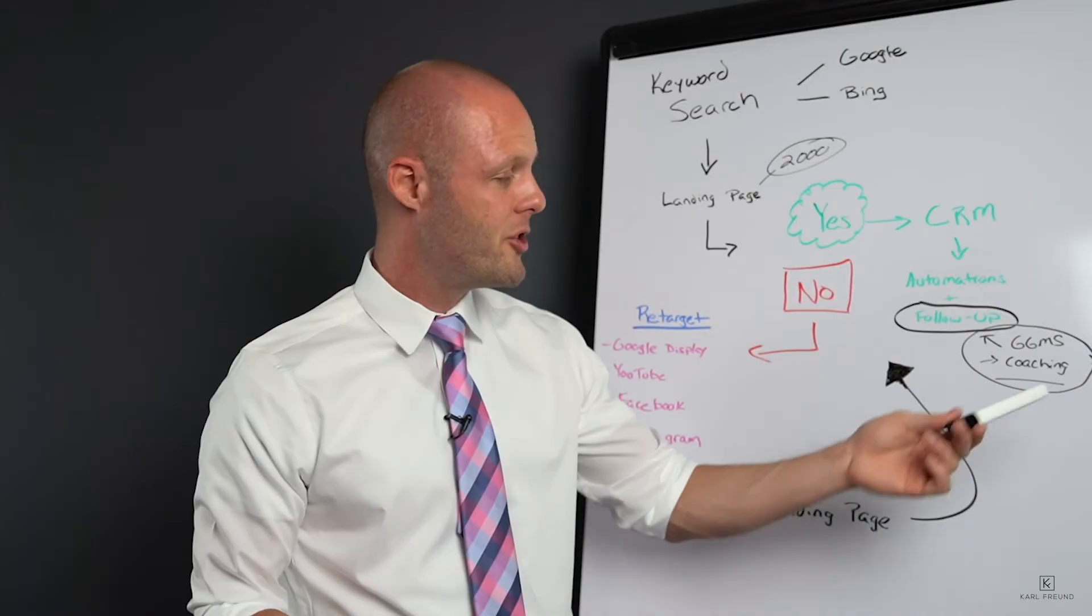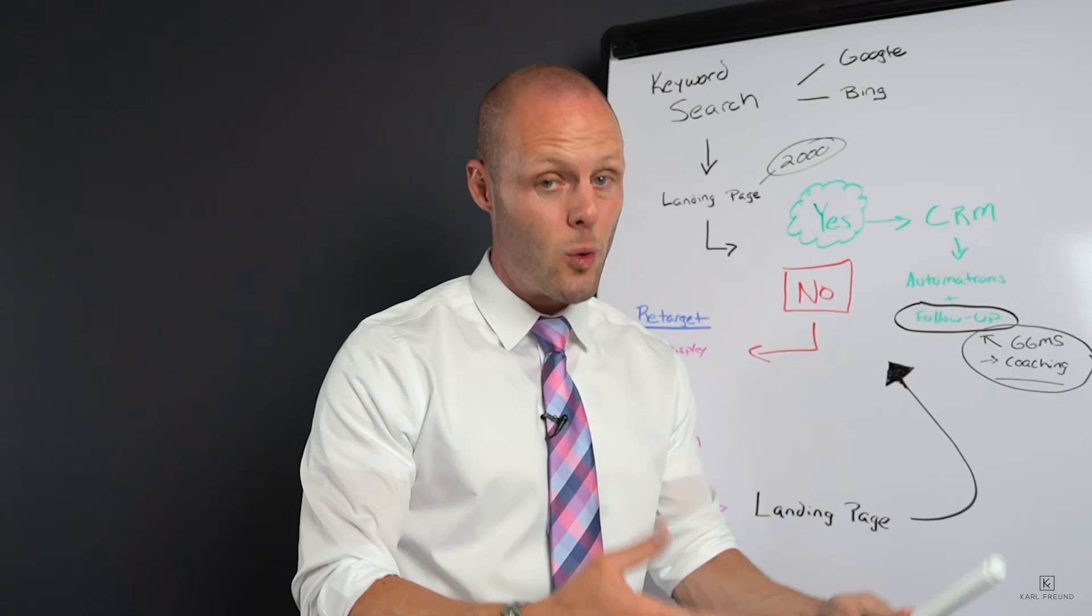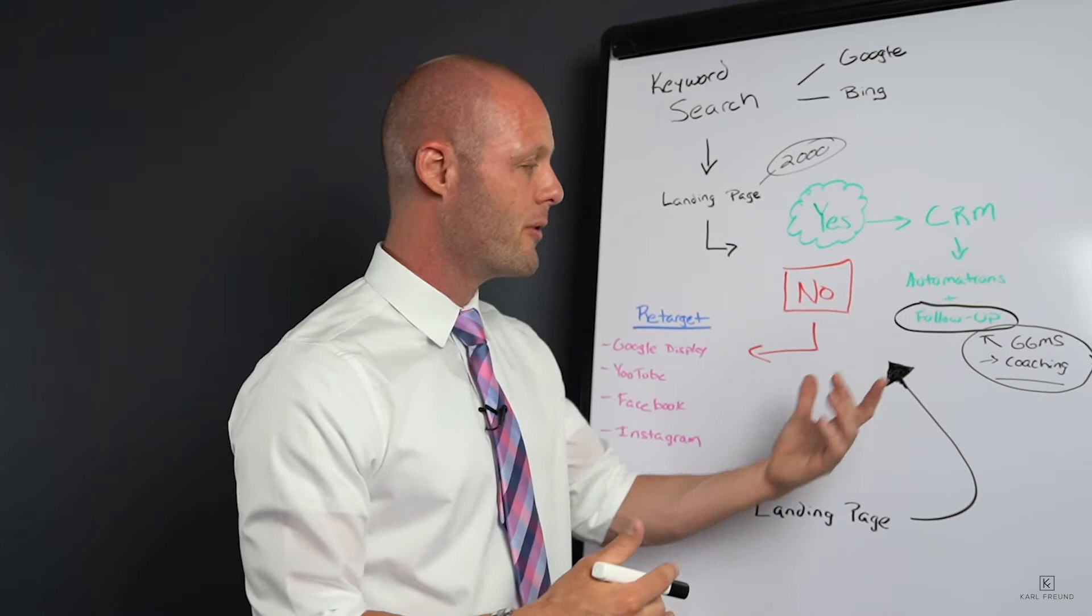That works and you're going to convert these guys into buyers, but it takes a lot of follow-up. Sometimes they're not ready for six months. You have to have a system in order to put them on a drip campaign for six months, 12 months, 18 months, 24 months to nurture that lead and start that relationship and do the follow-up. Segment your week out and block out time every single day to do follow-up, to do the nurturing of these leads. You'll be very successful.